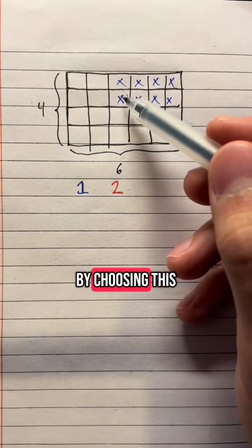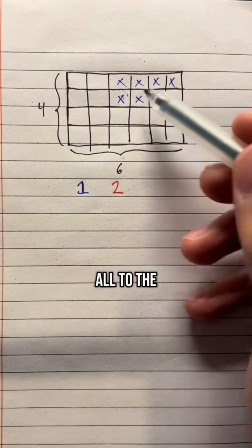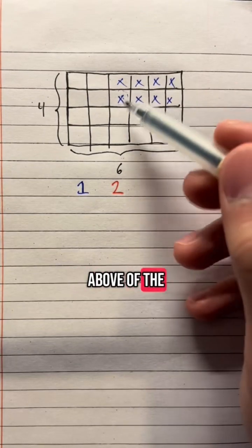So in this case, by choosing this square, all of these squares in this upper right corner are removed because they are all to the right and all above of the square that is chosen.